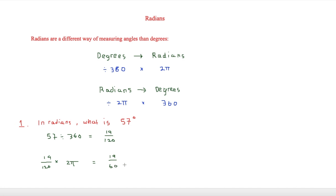This value is very close to 1 radian, so 57 degrees is approximately 1 radian — not exactly, but around 1 radian.